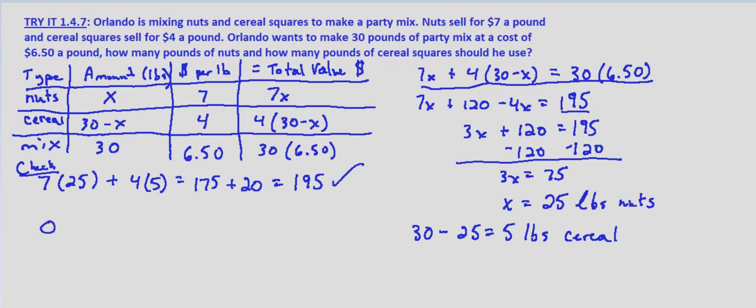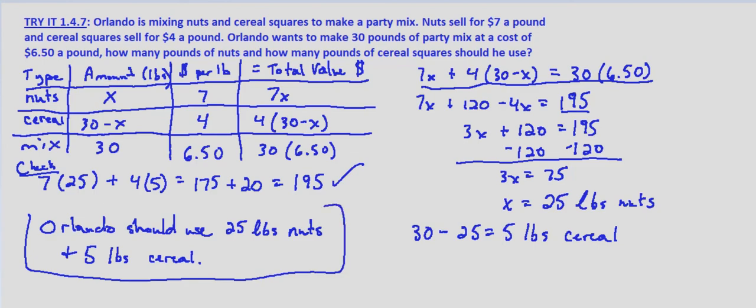So Orlando should use 25 pounds of nuts and 5 pounds of cereal in order to have 30 pounds of party mix at a cost of $6.50 per pound.